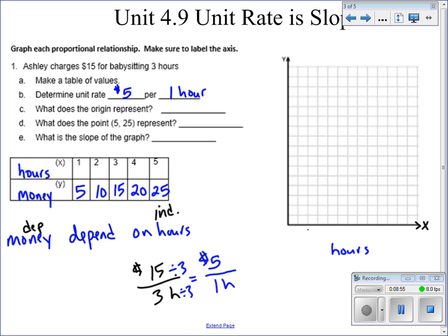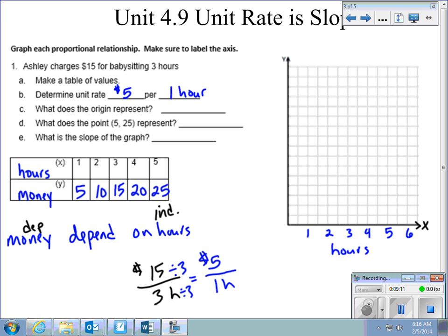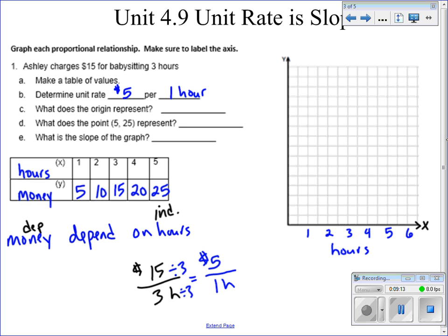And since we know our x-axis is hours, I'm going to write hours in here. I'm going to space it out a little bit because we don't have that many. So I'm going to skip a box in between. So first hour, second hour, third hour, fourth hour, fifth hour, sixth hour. And then for the dollars, I'm going to skip a box as well.